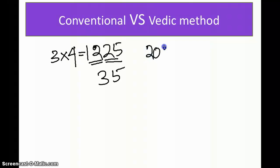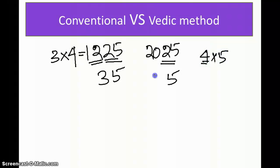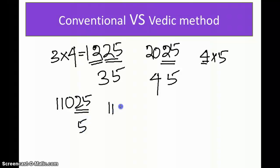Let's try √2025. As soon as you see 25, put 5. The remaining number is 20 — find consecutive numbers that multiply to give 20: 4 into 5 is 20. Take the smaller one, so the answer is 45. For a bigger number like √11025: put 5 for the 25, then 110 is 10 into 11. Take the smaller number, so the answer is 105.